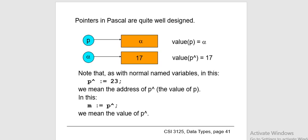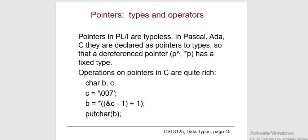Pointer arithmetic refers to the legal arithmetic operations that can be performed on a pointer. It is slightly different from regular mathematical calculations since only a limited set of operations can be performed on pointers. These operations include: increment, decrement, addition of an integer to a pointer, subtraction of an integer from a pointer, subtraction of two pointers of the same type, comparison of pointers of the same type, and assignment of pointers of the same type.